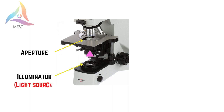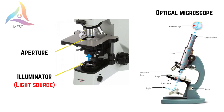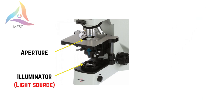The illuminator provides a steady light source that is used instead of a mirror. In an optical microscope, a mirror is used to reflect light from an external light source up through the bottom of the stage. Don't forget to turn the light switch on or off before and after using the microscope.